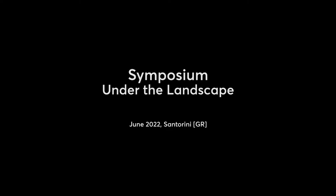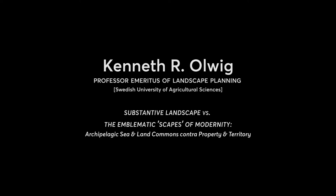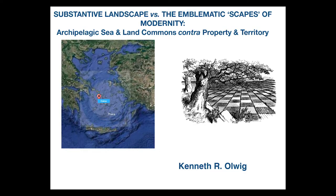Geography. I've changed the title just a little bit: 'Substantive landscape versus the emblematic scapes of modernity. Archipelagic sea and land commons contra property and territory.' You can see the pictures — the sea we're in right now with Delos in the center and Teresa towards the margin. On the other side is an illustration from Alice in Wonderland showing how we visualize landscape today using Euclidean geometry. The author of Alice in Wonderland was a geometer.